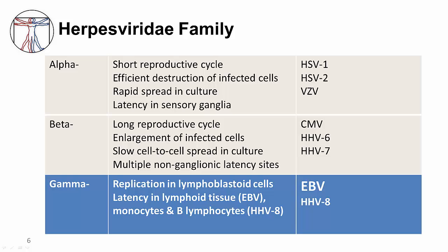Epstein-Barr virus is one of the two gamma herpes viruses, the other being human herpes virus 8, the causative virus for Kaposi's sarcoma, multicentric Castleman's disease, and primary effusion lymphoma in AIDS patients. Epstein-Barr virus is far more common in the general population and is the focus for most of this module. The hallmark of the gamma herpes viruses is replication in lymphoblastoid cells. For Epstein-Barr virus, latency occurs in lymphoid tissue, whereas for HHV-8, latency is in B lymphocytes and monocytes.